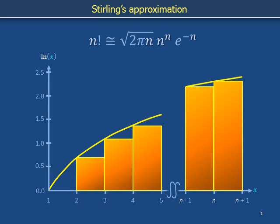In this video we used the integral of the natural log to obtain an approximation for n factorial for large values of n. Stirling's approximation will help us in the next video, where we provide an example of how a Gaussian probability distribution can arise in a system.